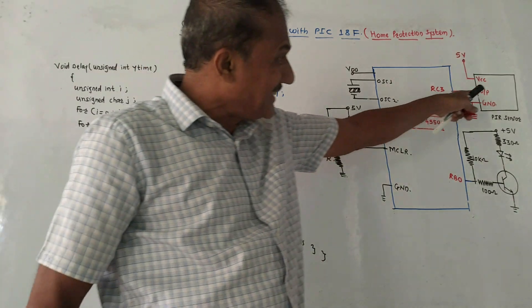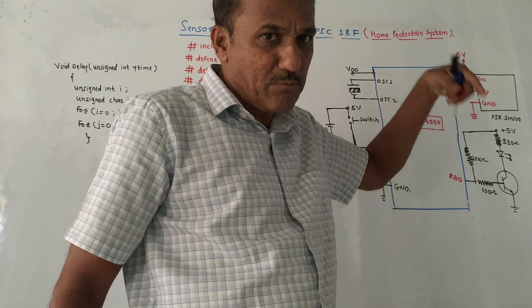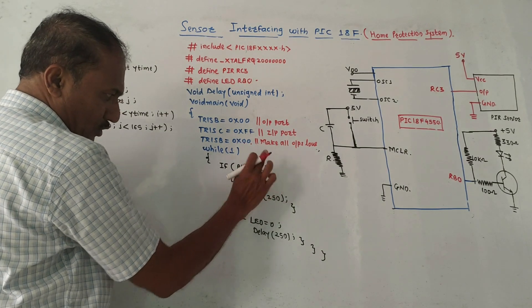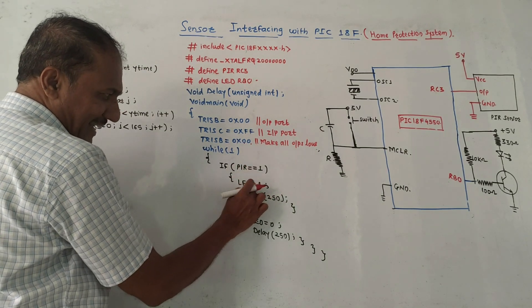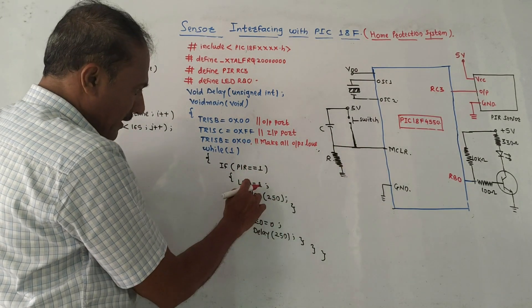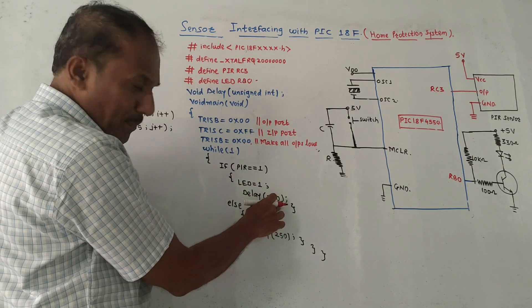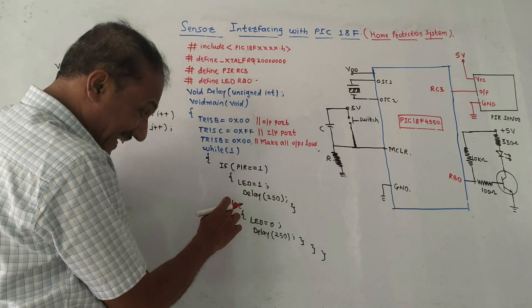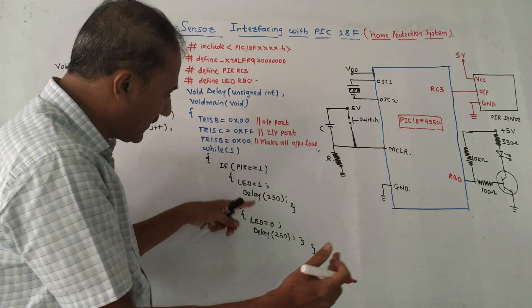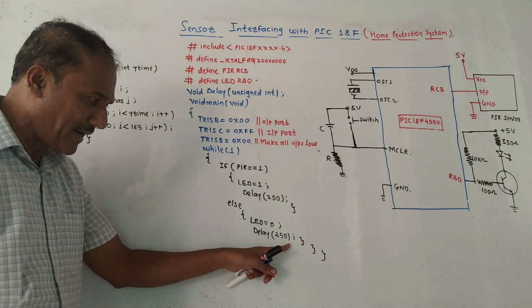Inside the while(1) loop: if PIR equals 1, meaning whenever the sensor output becomes high and some motion is detected, then LED is set to 1 — the LED should be on. Then a delay of 50 milliseconds is applied. In the else condition, if no motion is detected, LED is set to 0 — the LED should be off — and the delay is applied again.